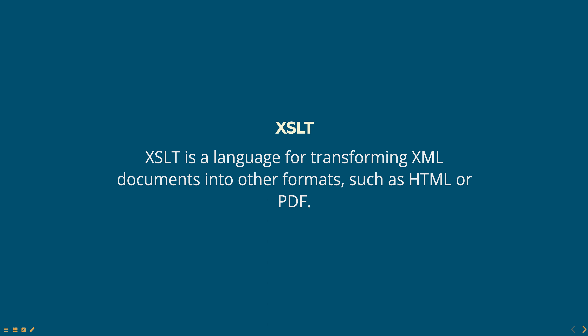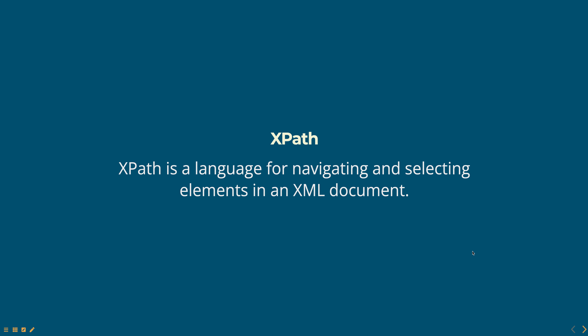XSLT is a language for transforming XML documents into other formats such as HTML or PDF. XSLT uses templates that match elements in the source XML document and specify how they should be transformed into the target format. XSLT also provides a set of functions and control structures for manipulating the data in the source XML document. XPath is a language for navigating and selecting elements in an XML document, used by XSLT to find elements that need to be transformed.